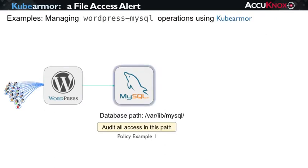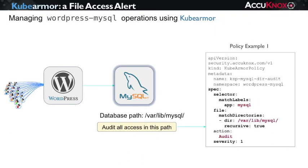Let's consider the point that MySQL essentially keeps its sensitive data files in a specific directory, and we'd like to maintain an audit trail of the accesses that take place within this directory. Here is a simple KubeArmor policy that we can deploy with the MySQL container to implement this audit function. I'm specifying the selector to match the MySQL label, and the match criteria to trigger on accesses to MySQL's DB directory. I'm setting the action to audit, which will produce a record for each access, and I'll set the severity to 1, which I'll use to indicate that this is a log-only policy.